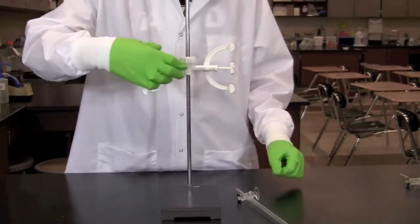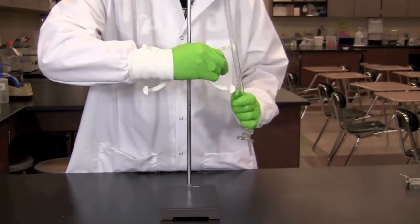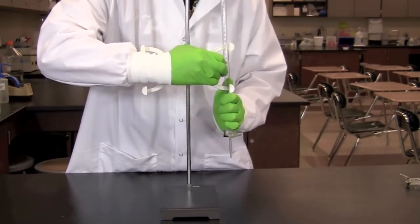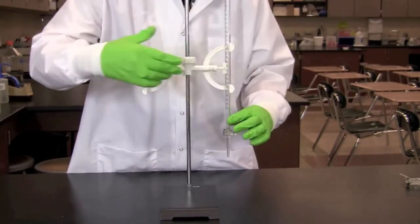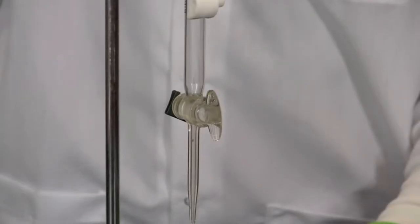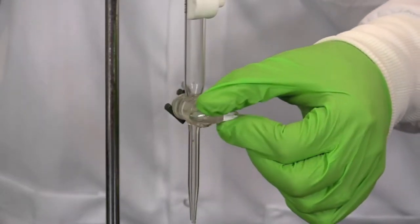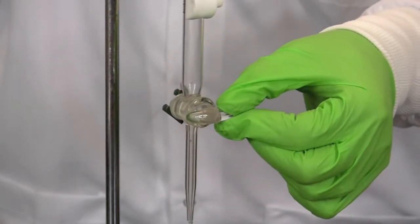First set up the titration apparatus. Clamp the burette into a stand so that it is vertical with the stopcock at the bottom. Make certain the stopcock is in the closed position. It is closed when it is turned perpendicular to the burette.